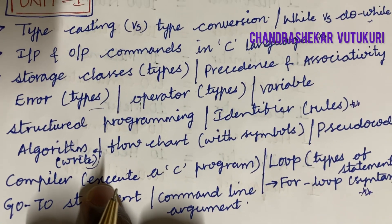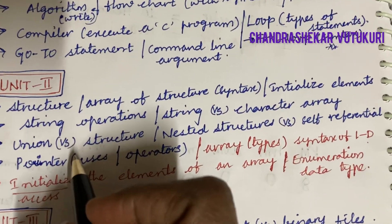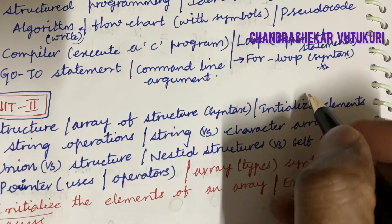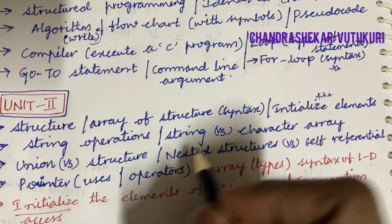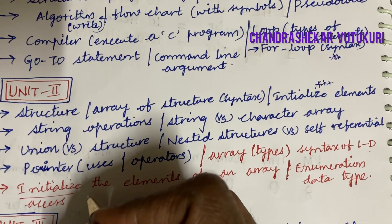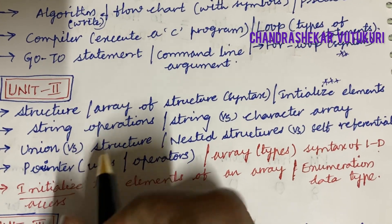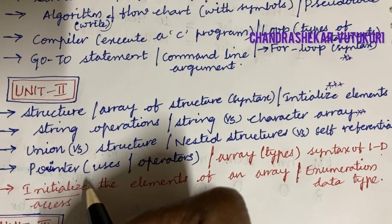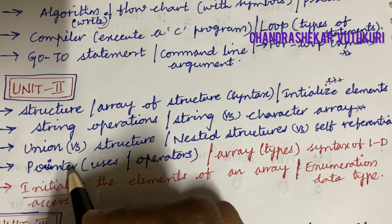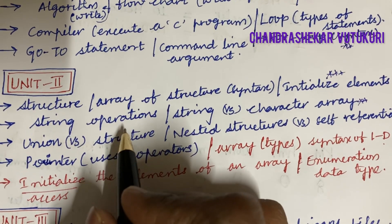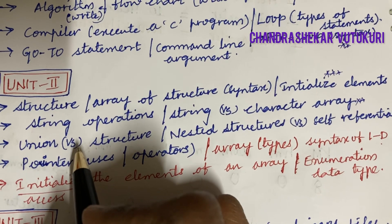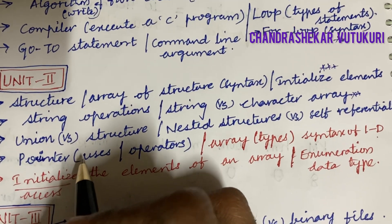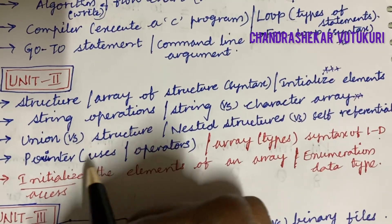Moving into Unit 2, it is all about defining the term structure and the array of structures along with its syntax, and initializing the elements of an array. From this part, you are going to get one question for sure. Define string operations and the differences between string versus character array. Define union as well as structure and their differences. The order to study is: first structure, then strings, then unions, and then pointers.